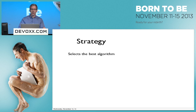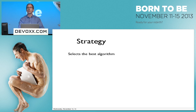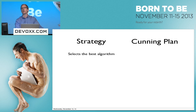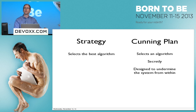Finally, we have the strategy pattern that selects the best algorithm at the time — implementation detail which one it selects. Compared to that we have the cunning plan, which also selects an algorithm in secret to undermine the entire system.